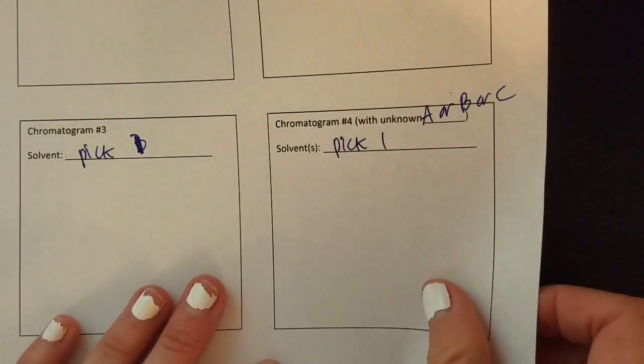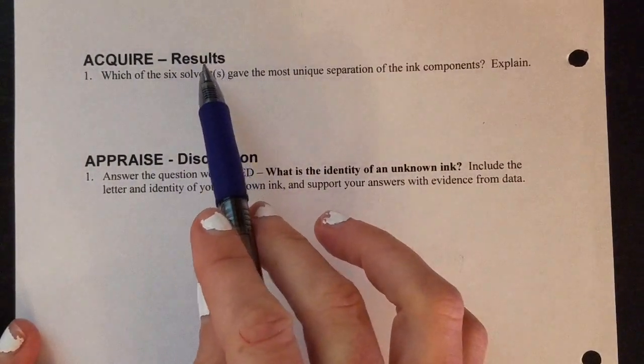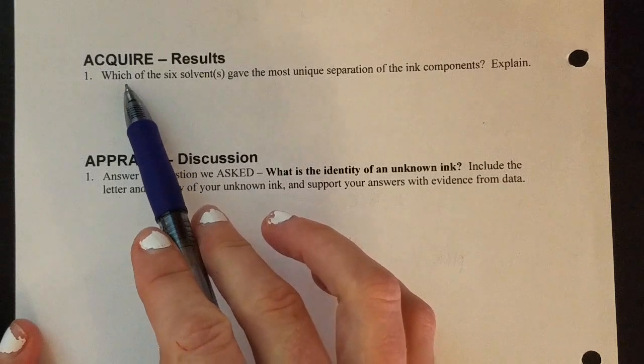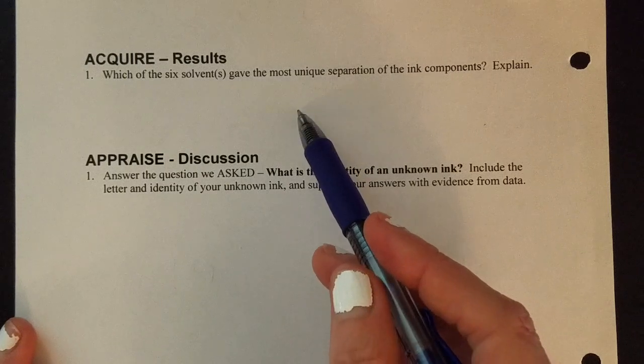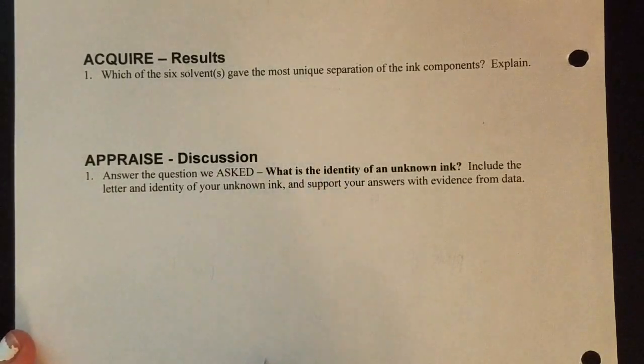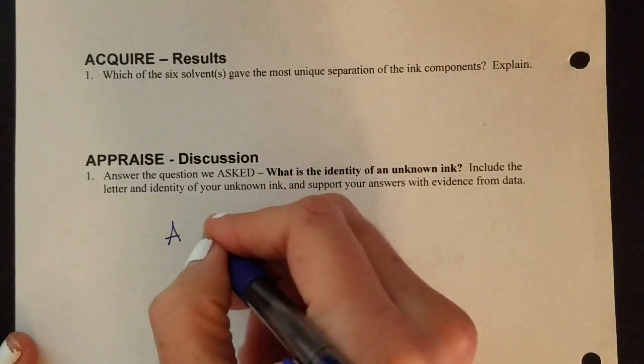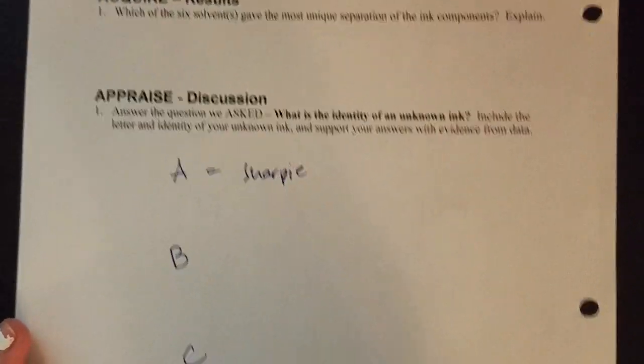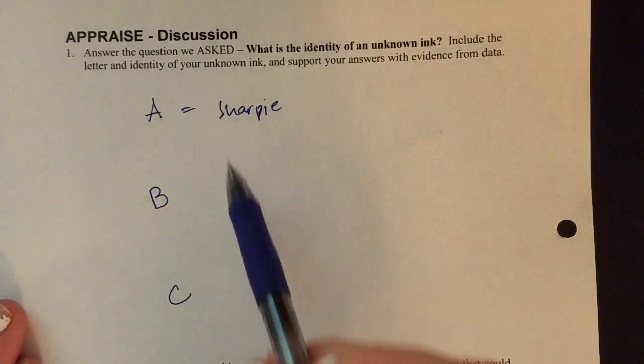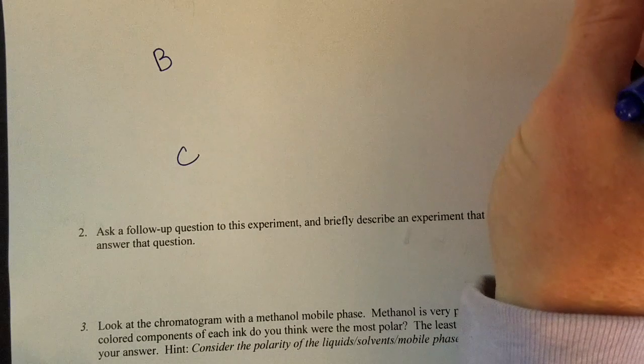The way that we'll know that you match things up correctly will be when you go to write on the other side. So for your results, you're going to look at which solvent was used to give the best separation of the ink components. So that will be one of those six. And then here for the identity of the unknown ink, you don't need to write anything beyond A, B, and C. So you might say that A was the Sharpie, B was the crazy art, and C was maybe Crayola. So you just need to put the identity of the pen. You don't need to write anything beyond that.